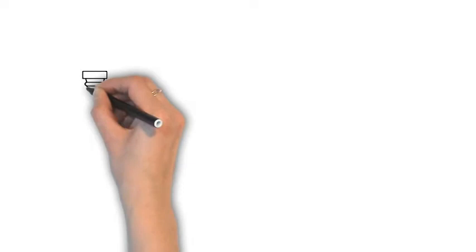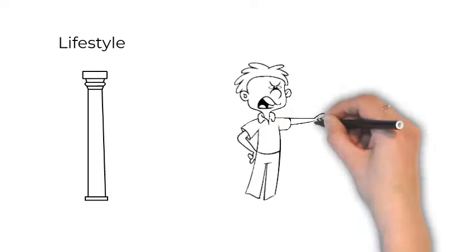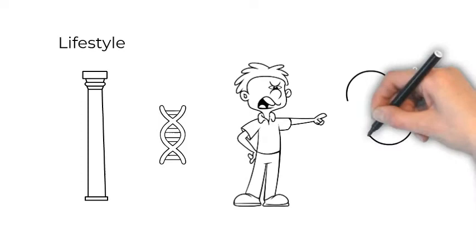The great news is that twin studies have shown us that the second pillar, our lifestyle, can actually control the way our genetics are expressed. Our lifestyle can also affect our response to the pathogens that we come in contact with every day.